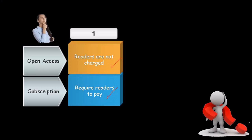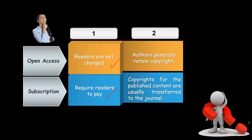Another important difference is copyright. Generally, authors retain copyright for open access publications, since they paid for publishing the paper. This means they can share their papers on social media, their own pages, and other platforms. However, in subscription journals, copyright for the published content is usually transferred to the journal. Note that with open access, since you retain the copyright, you can gain more citations by sharing your work on social media and other sources.